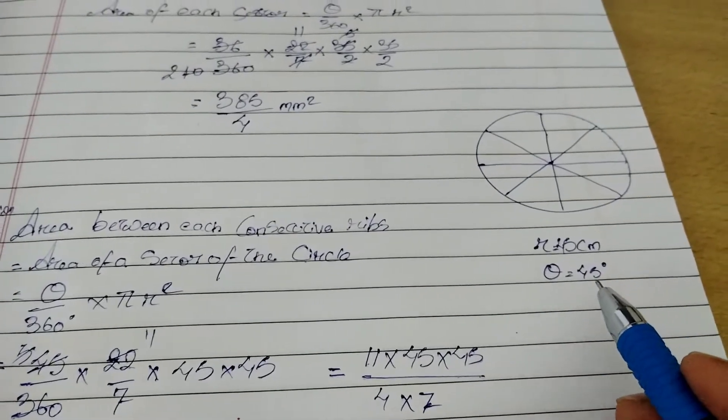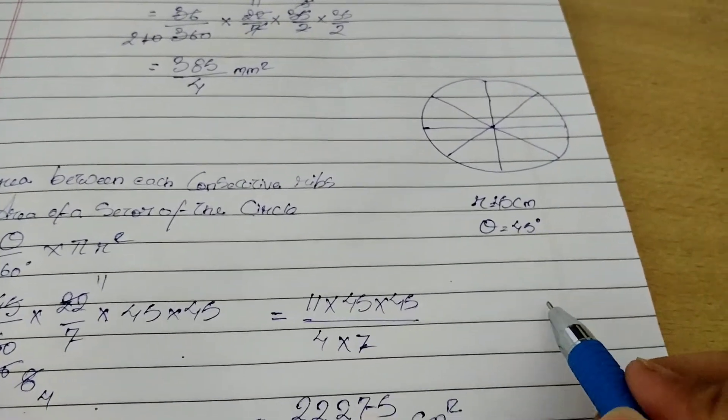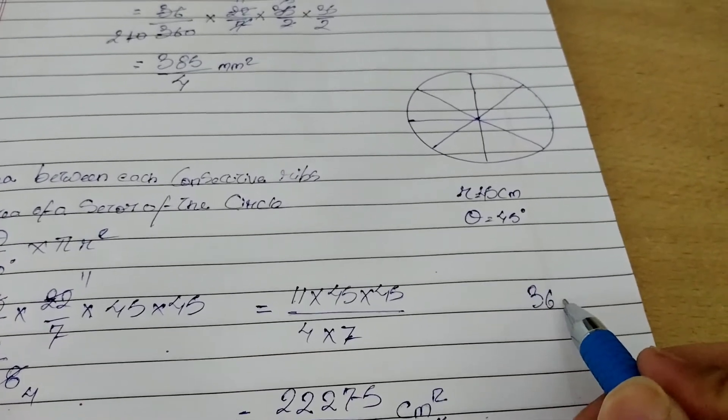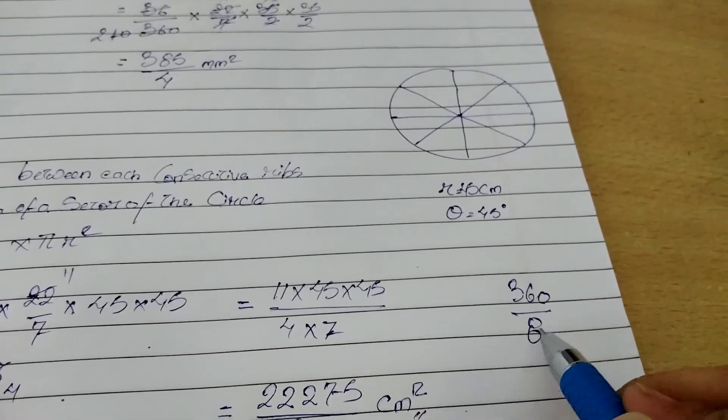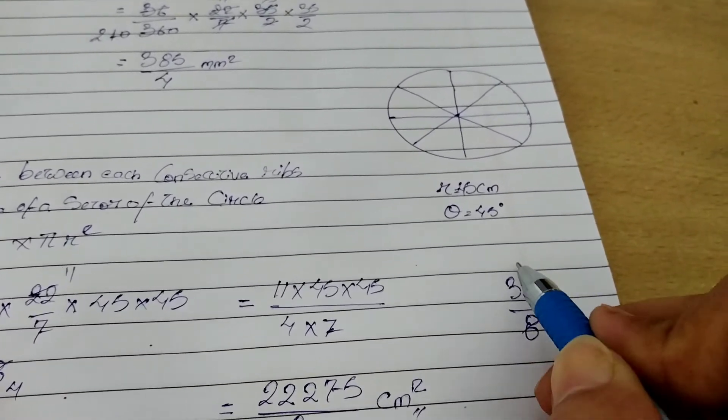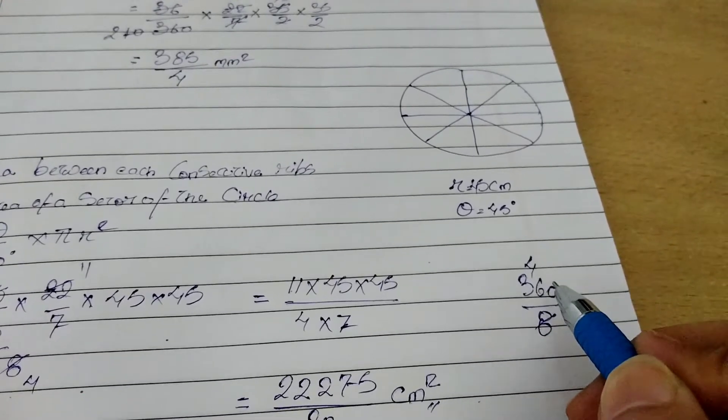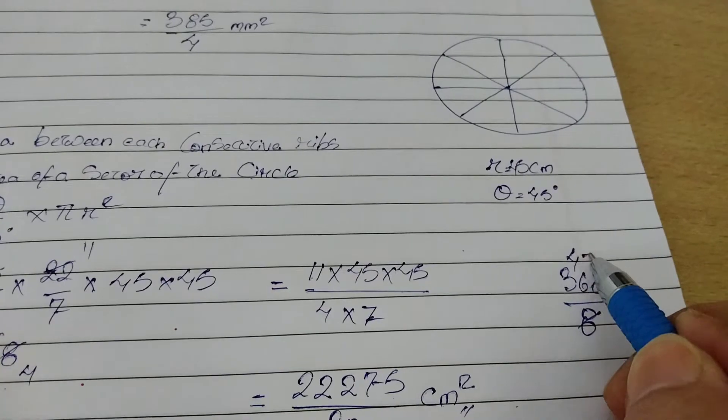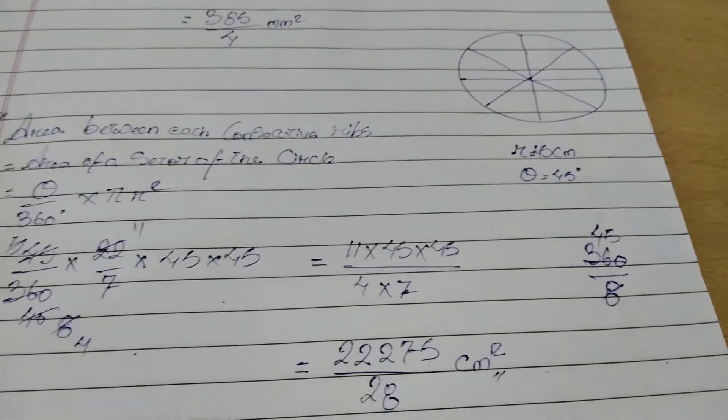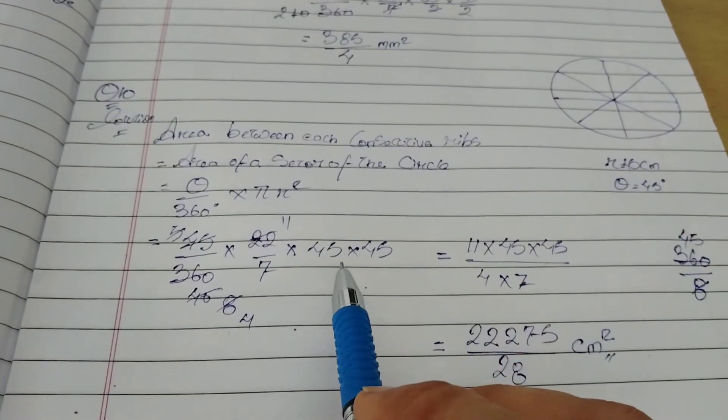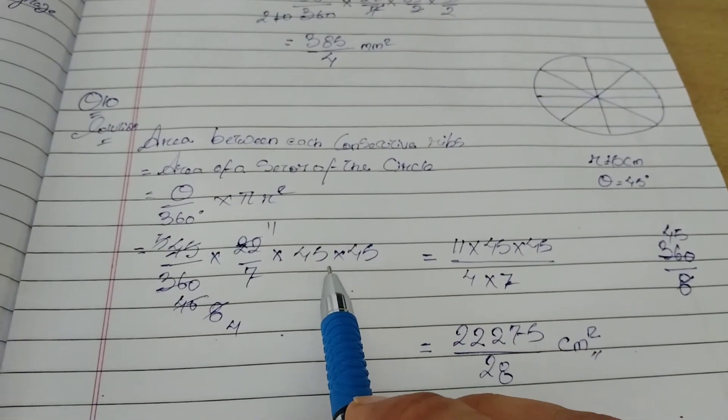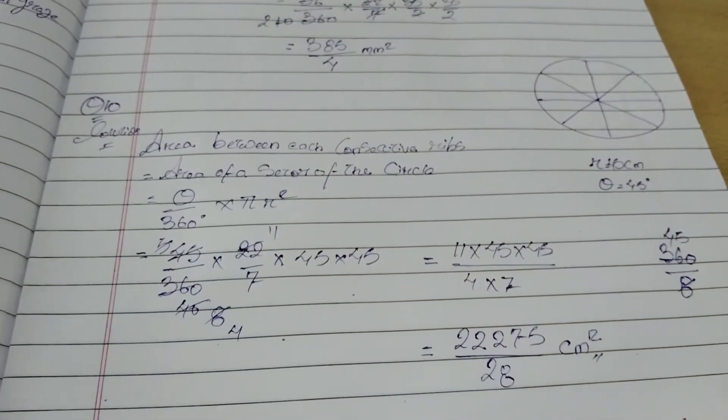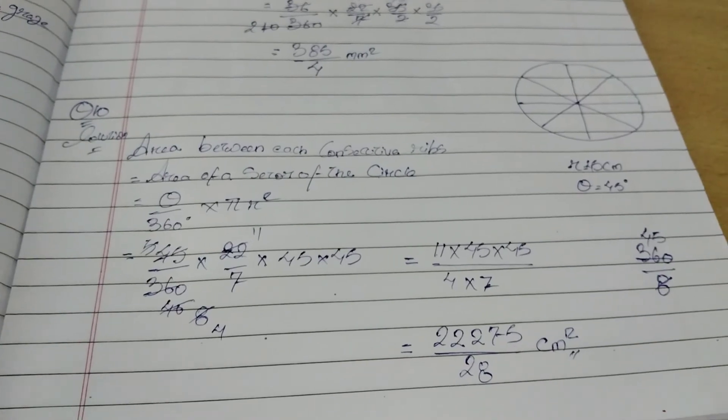I'll just show you how I got 45. 360 by 8. 8, 4, 32, the remaining goes here and 8 divides it. So that's how we get 45 degrees. Okay, so with this we have completed question number 10 of section 12.2. Thank you.